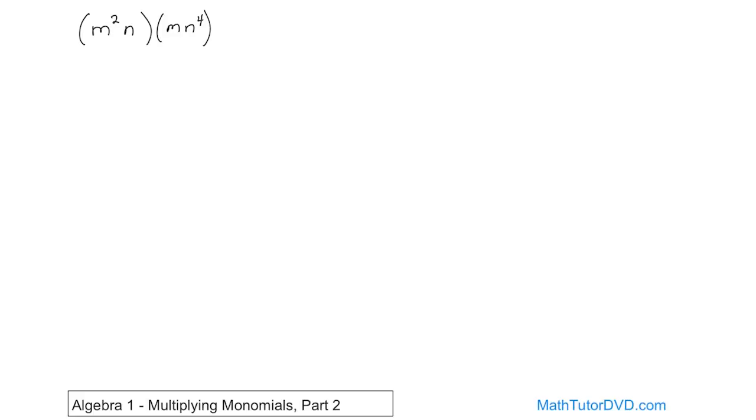The only difference between this and the previous problems is that we have two variables. This is a monomial, and this is another monomial. When we multiply them, everything's being multiplied together: m squared times n times m times n to the fourth.